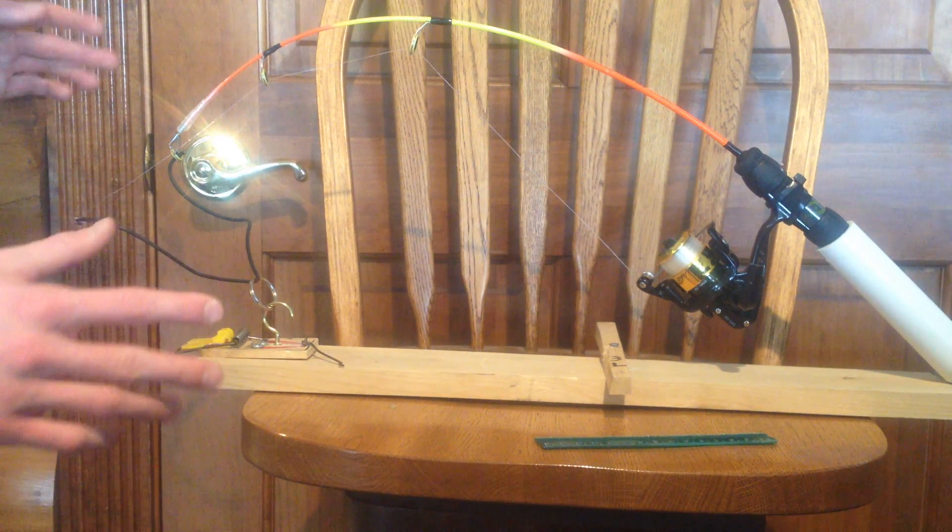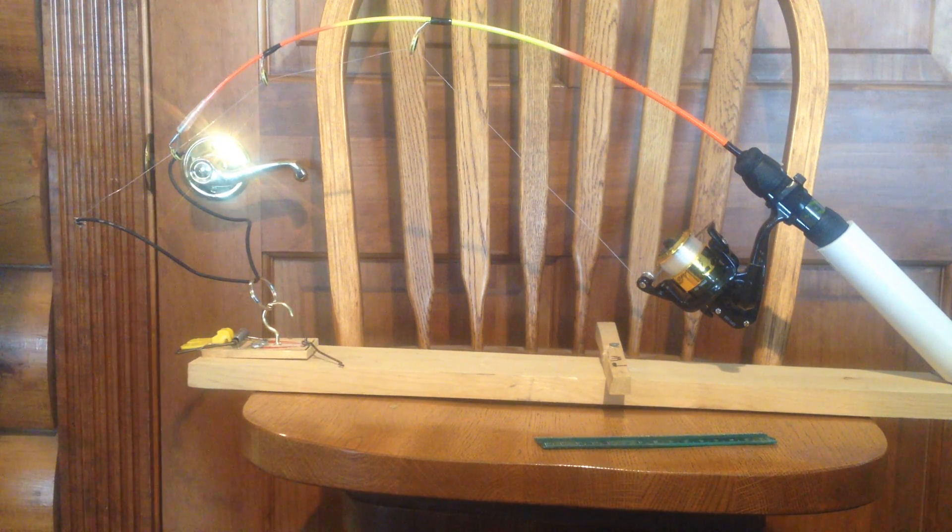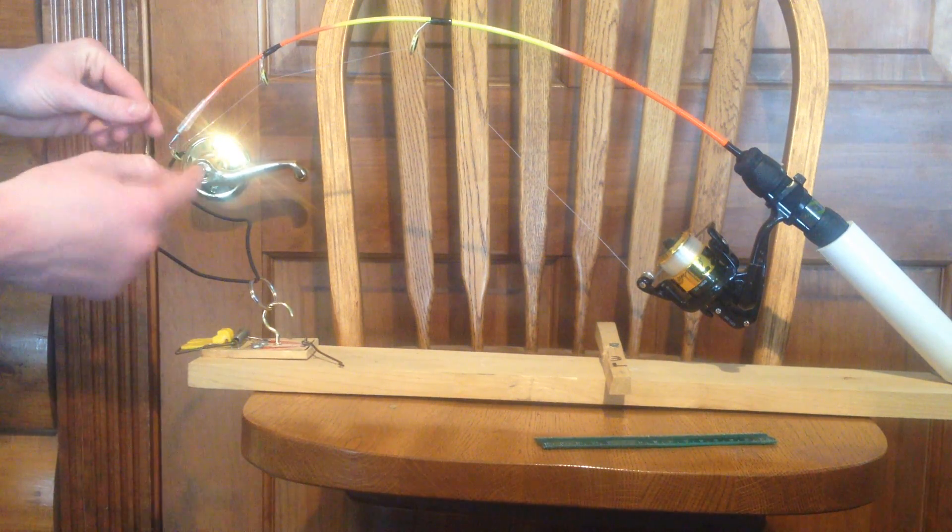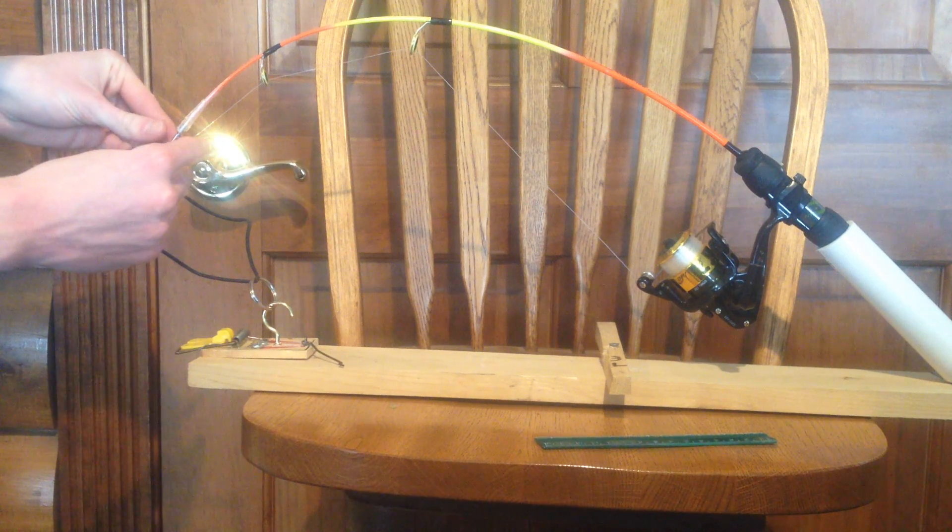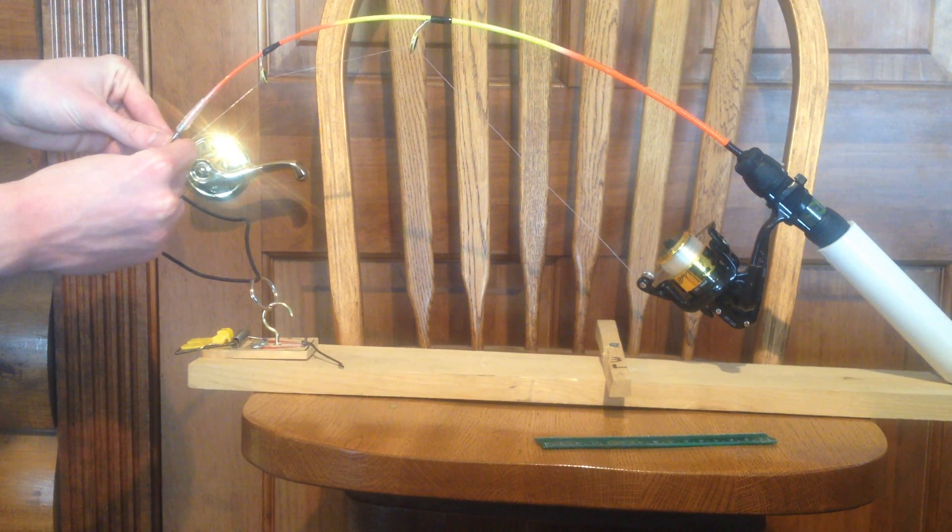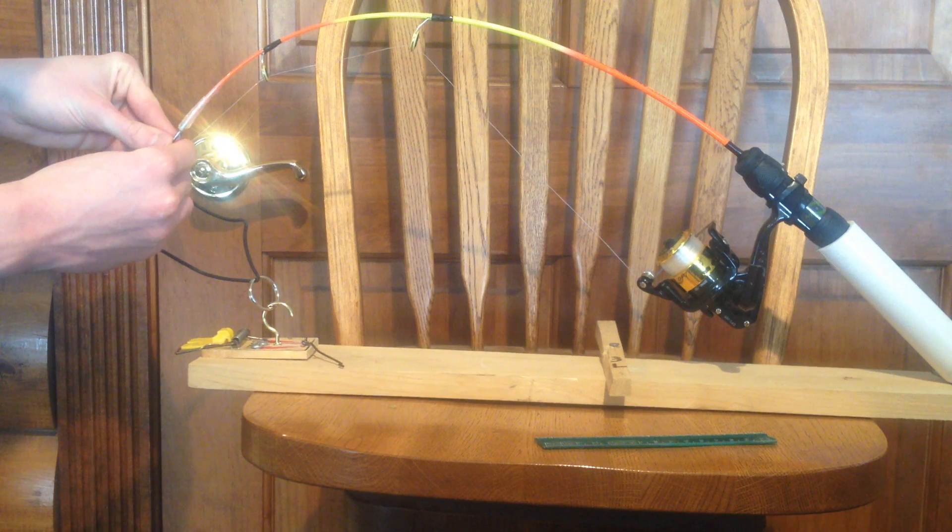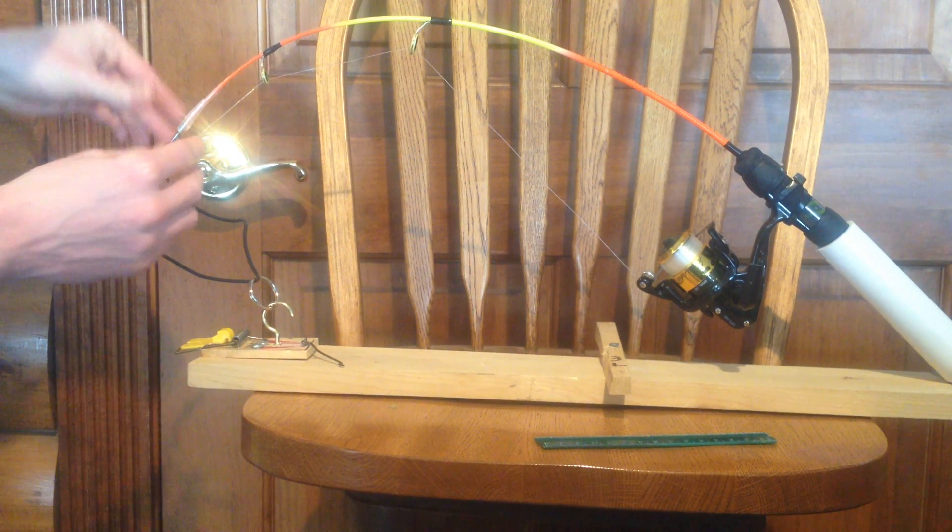Then what you're going to do is the last step right here. After you've baited your minnow and everything and it's already set up, you slide this little trigger part down to the rod tip. And what this does is with the slightest of taps, then your automatic fisherman is going to go off, alright.